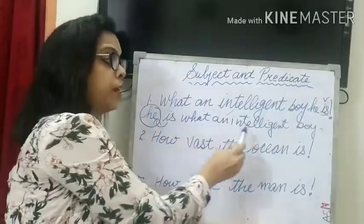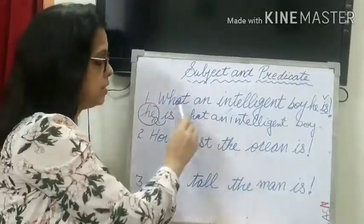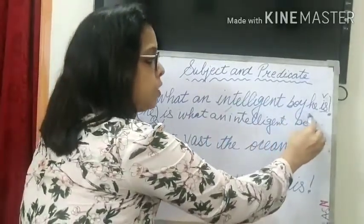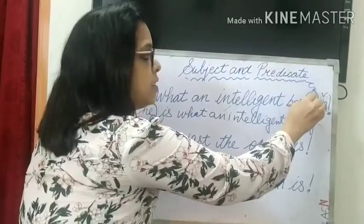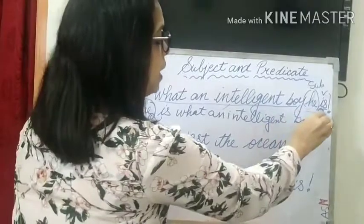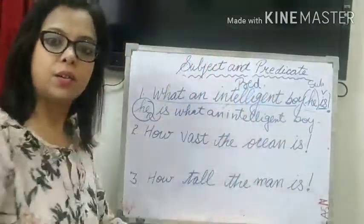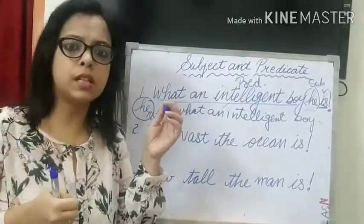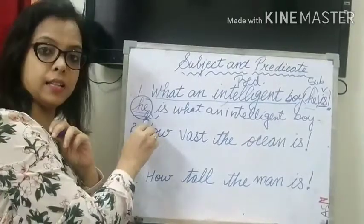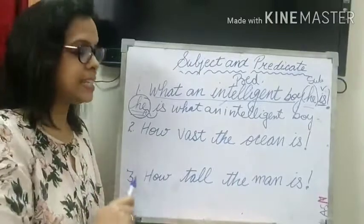So who is what an intelligent boy? The answer is: he is what an intelligent boy. In the sentence 'What an intelligent boy he is', the subject is 'he' and 'what an intelligent boy is' is the predicate. You might be thinking why 'boy' is not the subject — because we are not getting 'boy' as the answer; we are getting 'he'. So 'he' is the subject and not 'boy'.